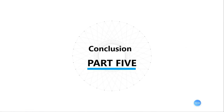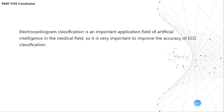Conclusion. Electrocardiogram classification is an important application field of artificial intelligence in the medical field. It is very important to improve the accuracy of ECG classification. At present, ECG classification has introduced algorithms such as support vector machine and k-means. However, due to the low accuracy of these algorithms, this paper proposes using convolutional neural networks for ECG classification, which achieves higher accuracy than the k-means algorithm and support vector machine.